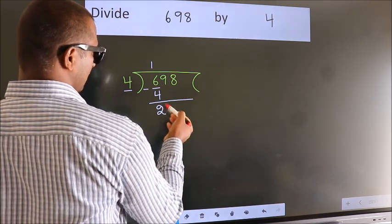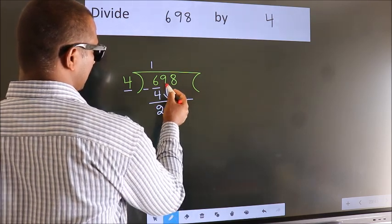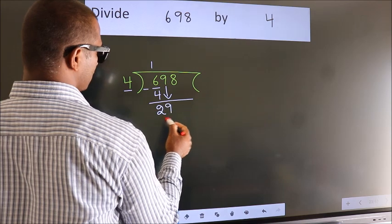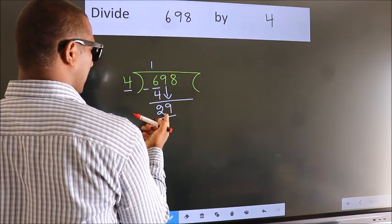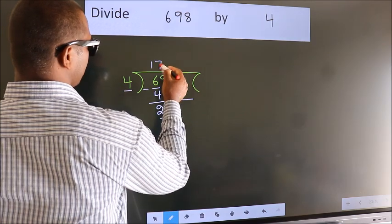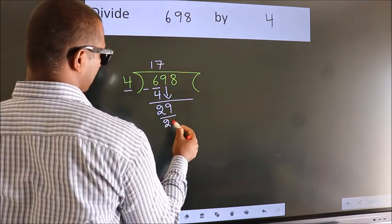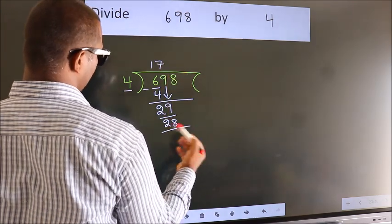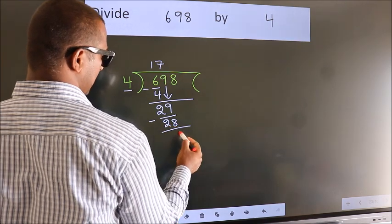After this, bring down the beside number. So, 9 down. So, 29. A number close to 29 in the 4 table is 4 sevens, 28. Now, we subtract. We get 1.